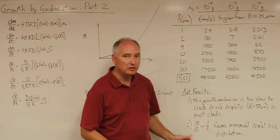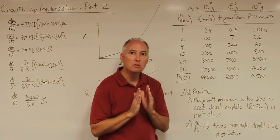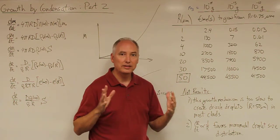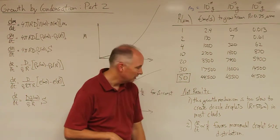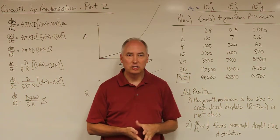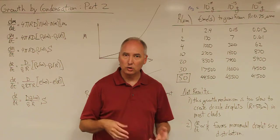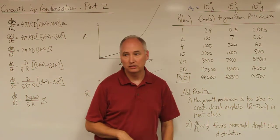And what that does is it kind of creates a monomodal size distribution where all of the initial cloud droplets are actually approaching the same size. And that has implications when we start talking about the collision coalescence mechanism, which will be the subject of the next lecture.